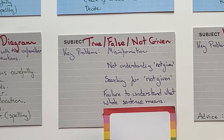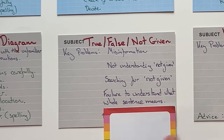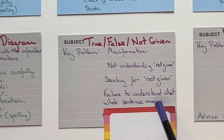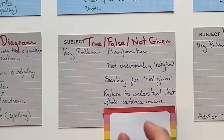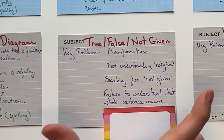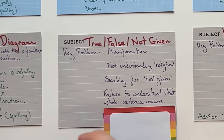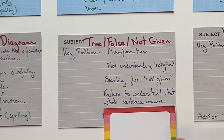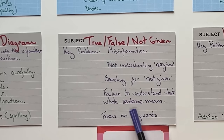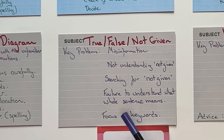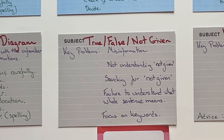Another big problem is a failure to understand what the whole sentence means. Many teachers use a keyword strategy, but focusing only on keywords means you don't understand what the question statement actually means. You need to look at the entire sentence — what does the entire sentence mean? If you focus in on keywords, you won't understand the sentence, which means you'll never be able to say if it's false, true, or not given.